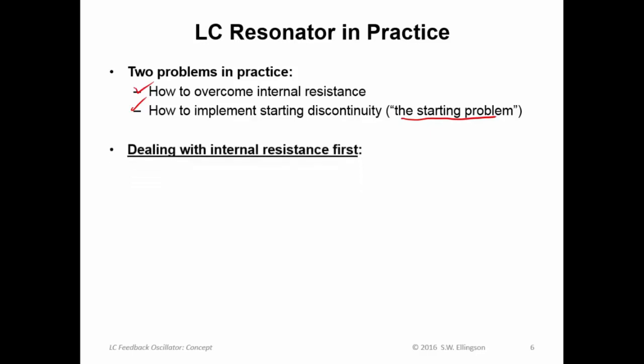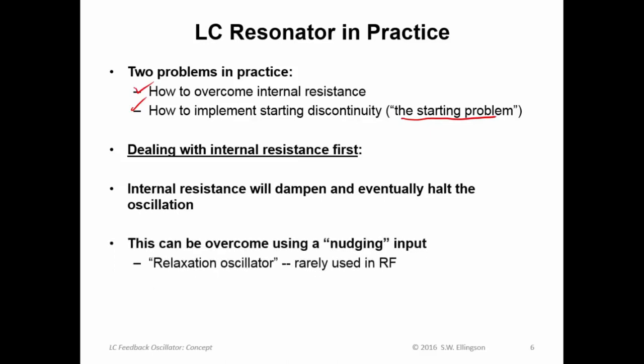We're going to deal with the internal resistance issue first. And as I just pointed out the internal resistance will dampen and eventually halt the oscillation. One way you can imagine overcoming internal resistance is by nudging the input. So for example if you have something that wants to do this what you could do is on each period you could apply some signal which causes a boost so that the next period then looks the same. And a boost here so that next period looks the same so each subsequent period always comes back to the original starting point. This is actually known as a relaxation oscillator.